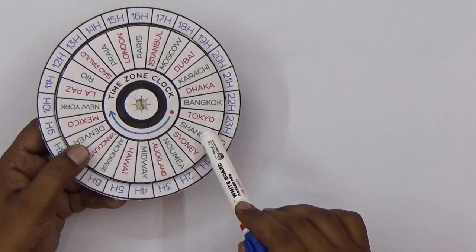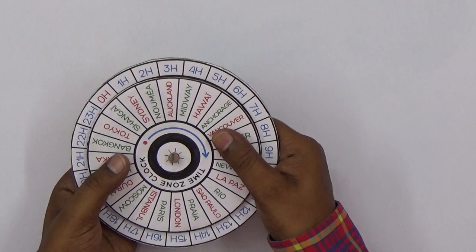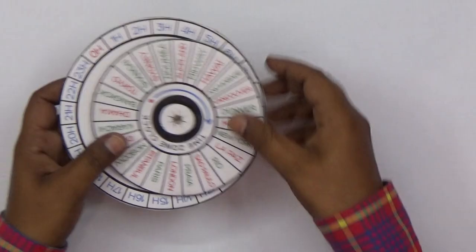You only need two circular parts. You can take two circles—you can remove this group and see. Only these two parts are needed for this project.